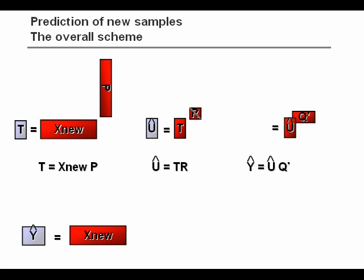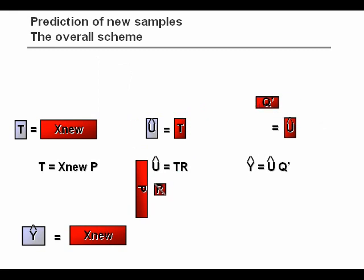But there is a way to make this a little bit faster if you are only interested in the predictions. We can take all these model parameters and combine them into one matrix by simply multiplying them with each other.